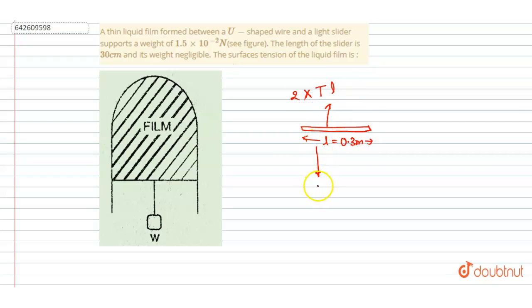If you draw the diagram, you can see this tension force is balancing the weight W. So we got the slider FBD. We can write 2TL equals W.